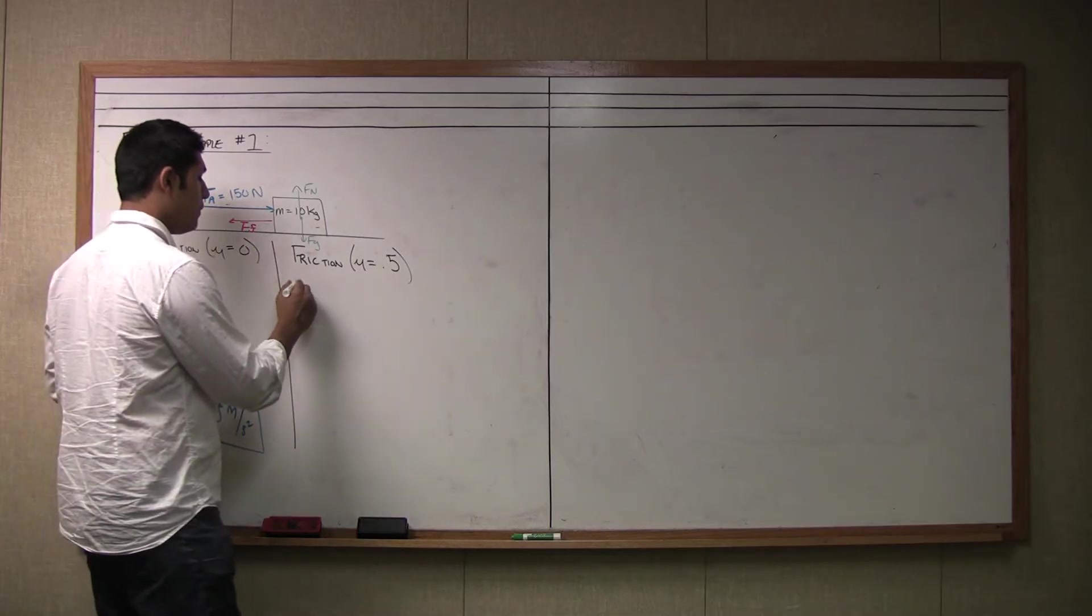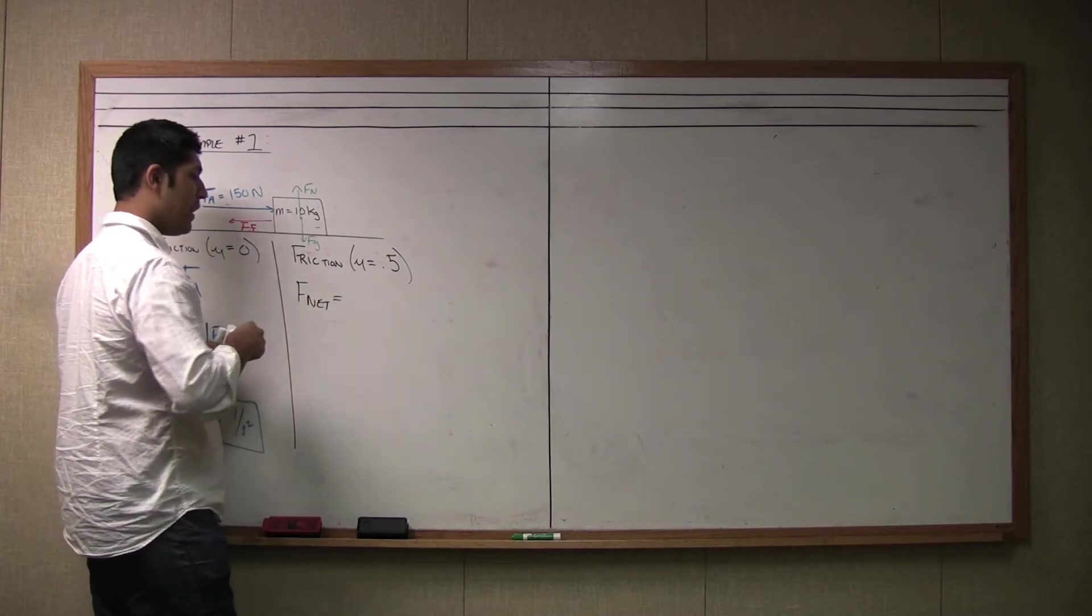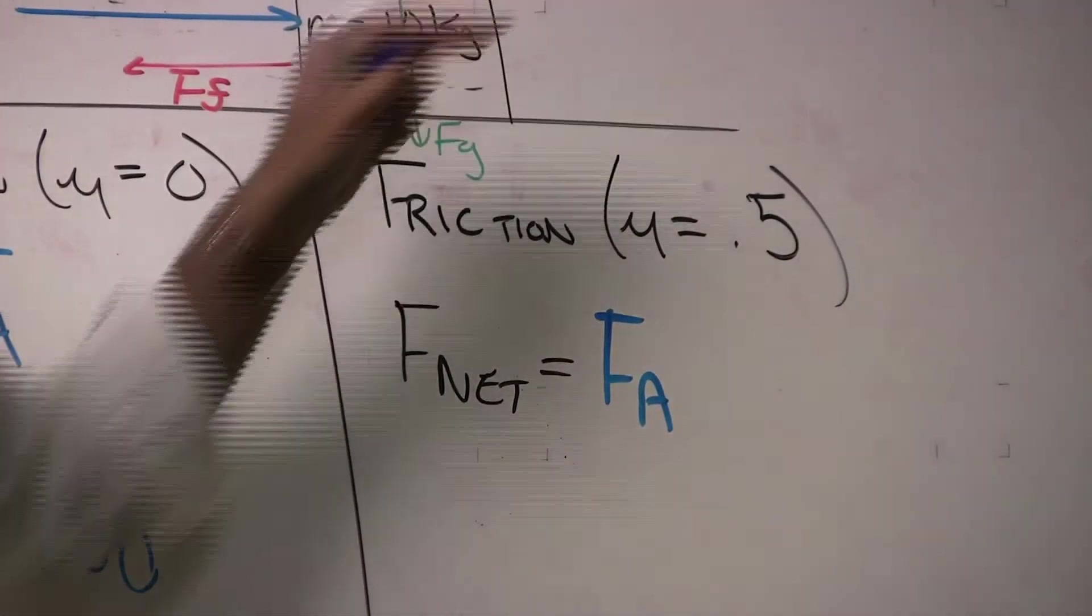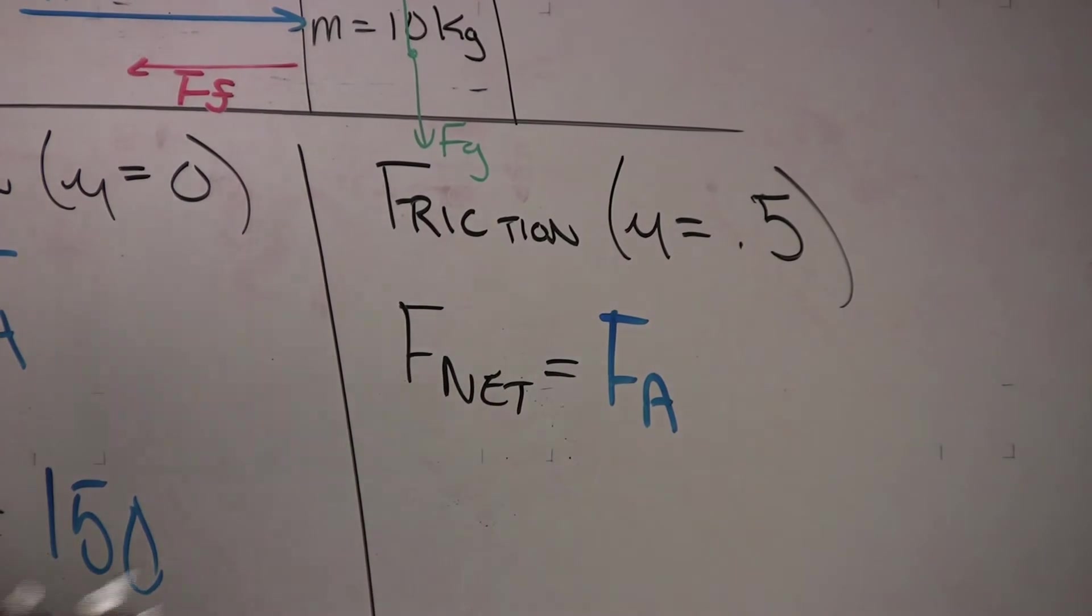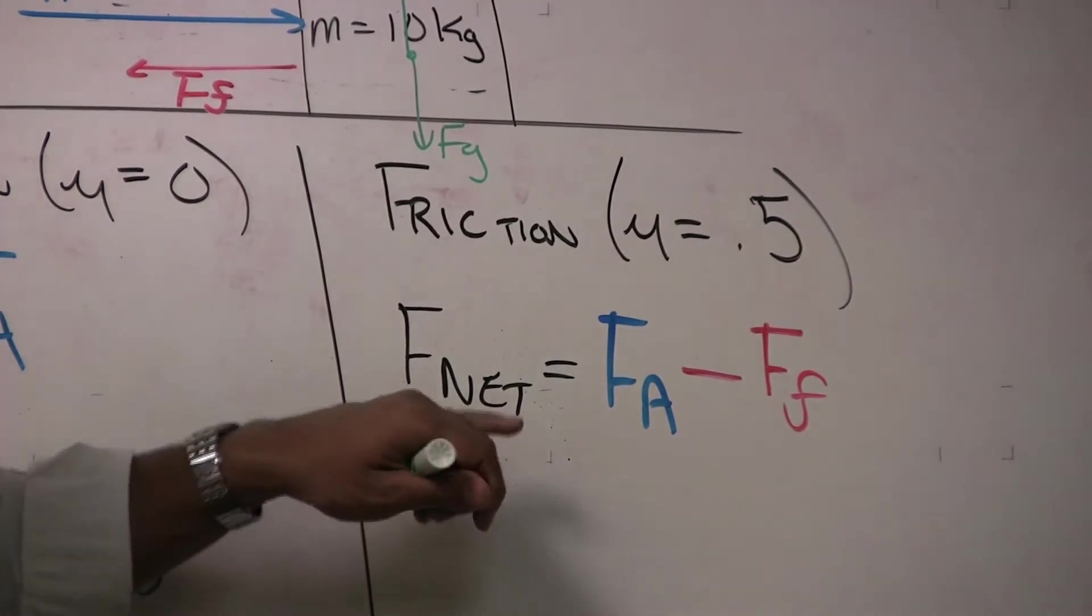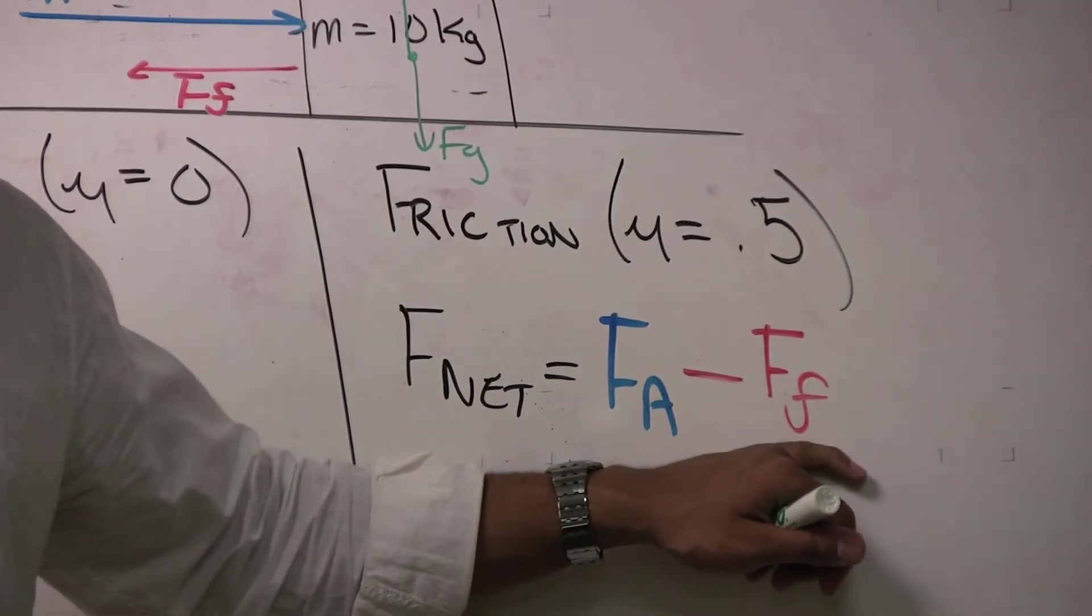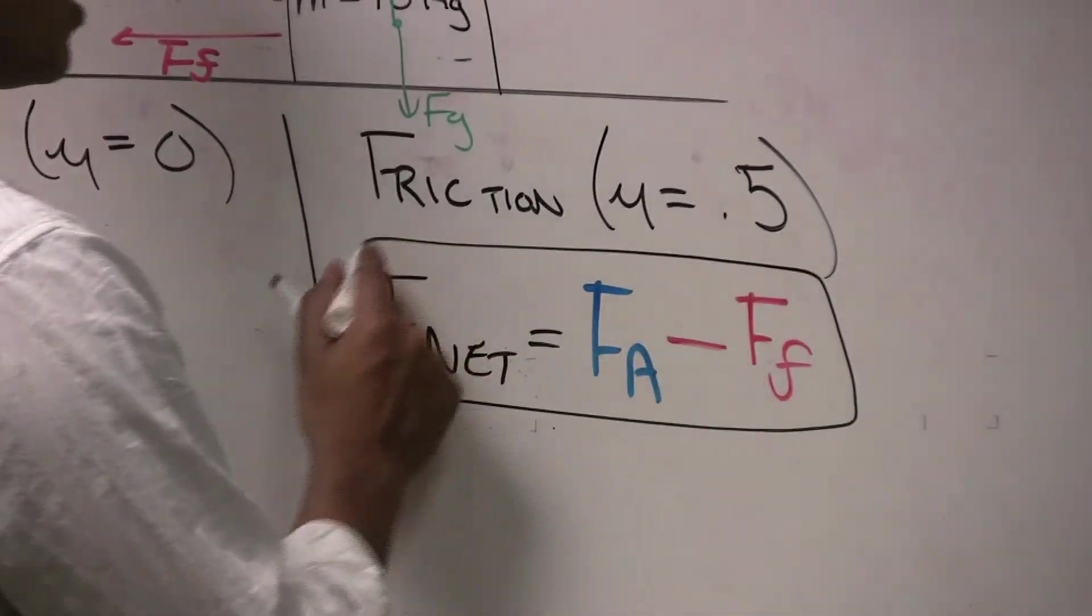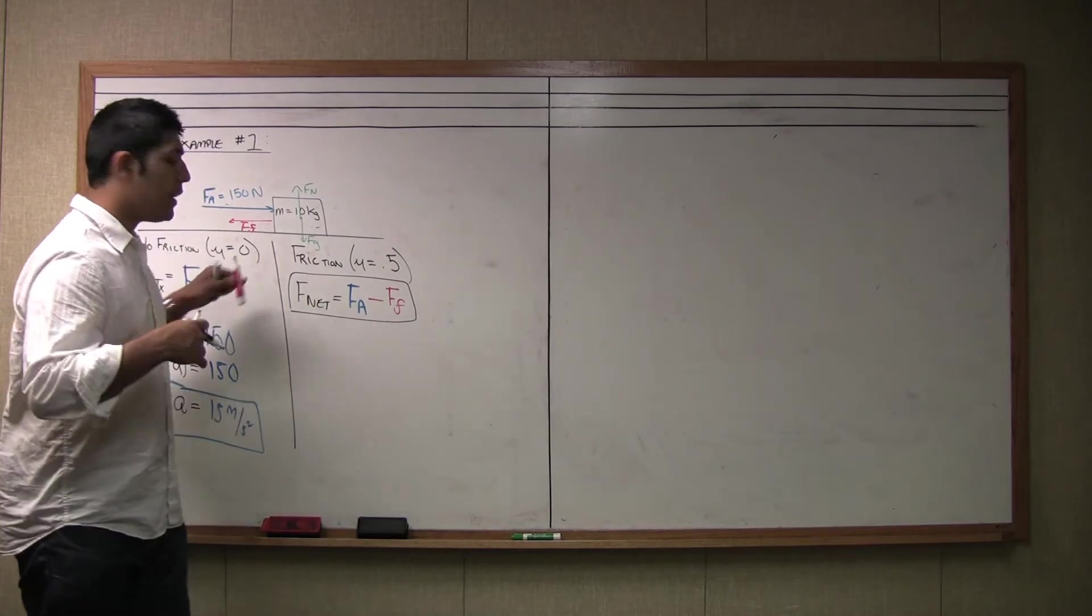F net in the x direction is equal to the applied force F A and since F A is pointing towards the positive x axis and the force of friction is pointing towards the negative x axis, we are going to subtract the force of friction from the net force values. So now I have F net is equal to F A the applied force minus F F the force of friction. This is the physics behind it. If you can do this, then you can solve any force diagram problem because the next step now just involves a little bit of substitution.